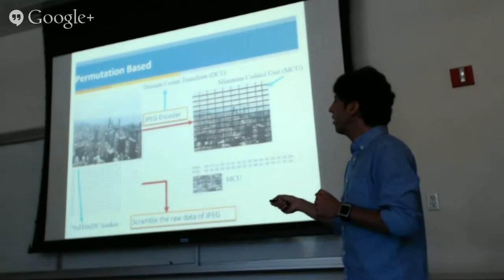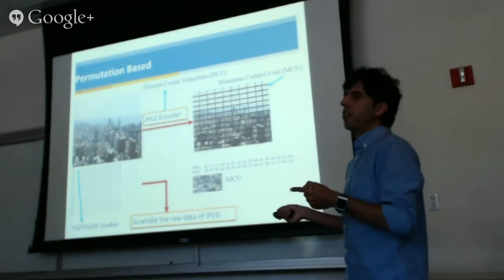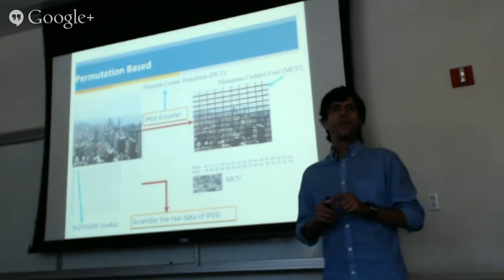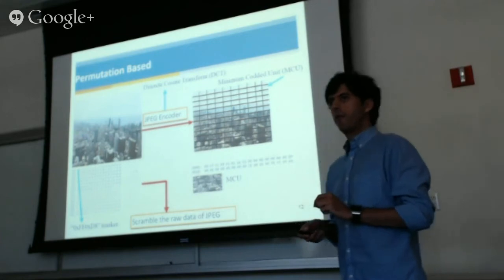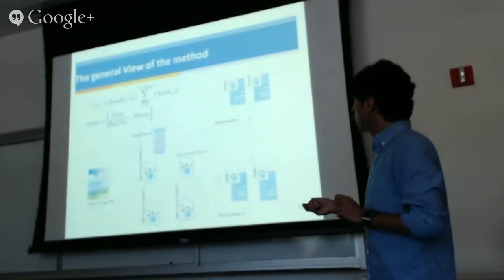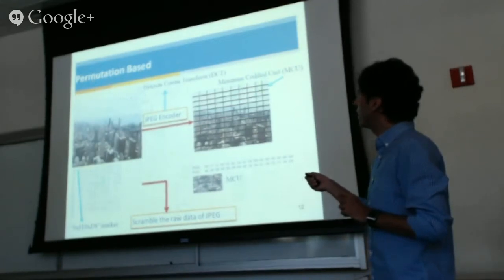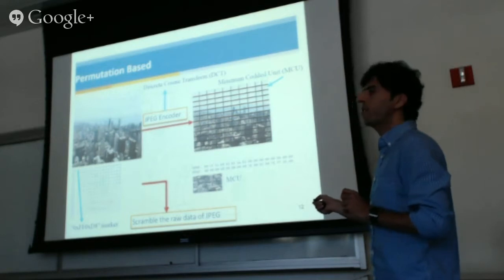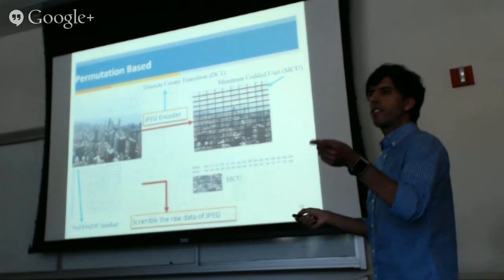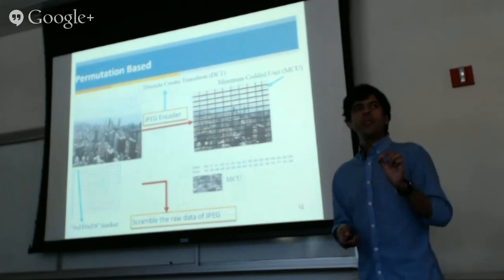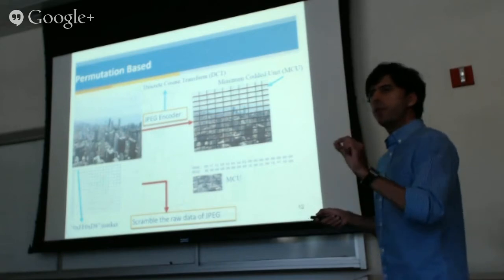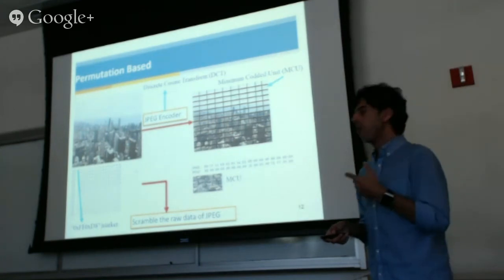We have a sequence of bytes, and we scramble the raw data of the JPEG. This is the worst case in our scenario when we consider the JPEG format. The problem with JPEG format is that each MCU can be retrieved individually. So if we scramble the MCUs — first, second, third — when we want to retrieve the whole image, we need to retrieve each MCU. If an attacker can retrieve even one MCU, they can retrieve one part of the image. This is one of the problems.